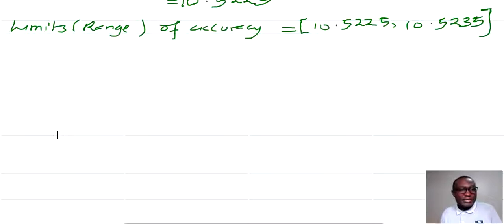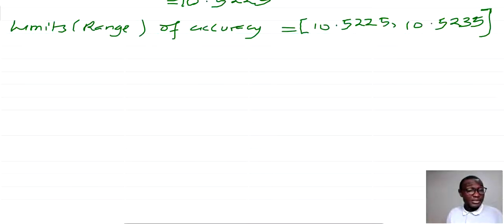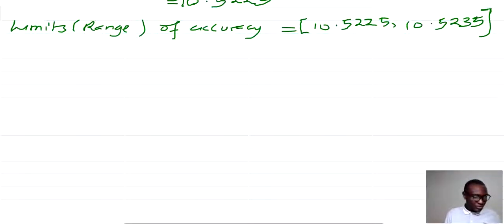How about if it wasn't a single value like 10.523, but rather a combination of values combined by operations such as multiplication, addition, subtraction and division? How do we navigate getting the limits and thereby getting the error? That's the next thing which we are going to do.